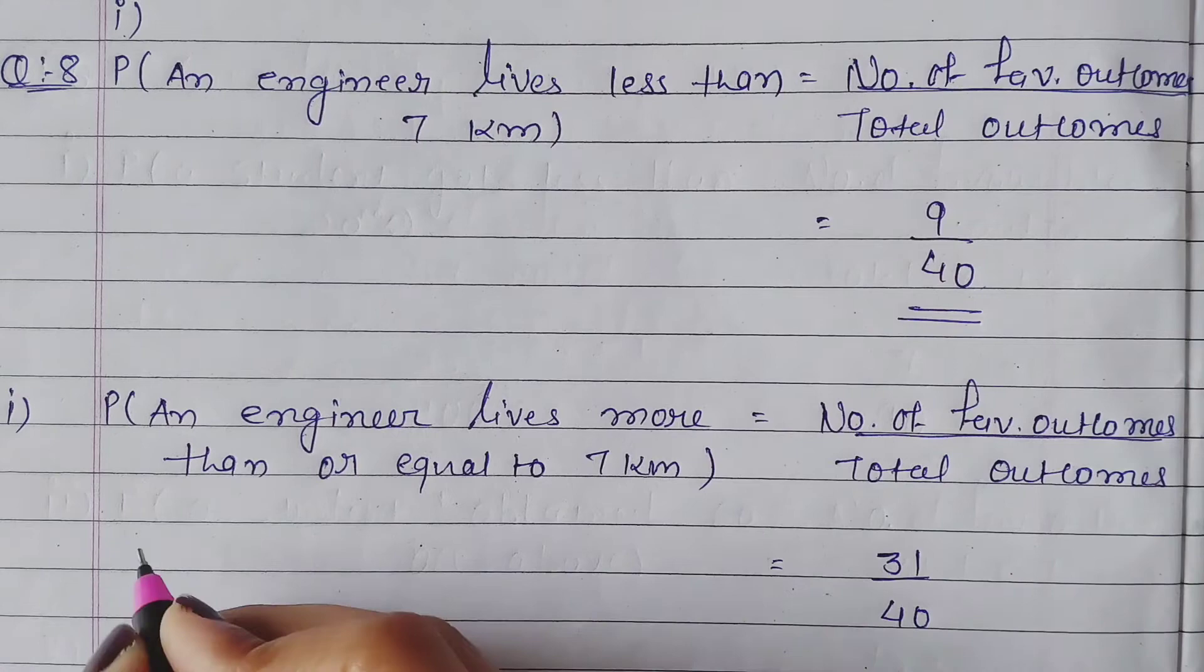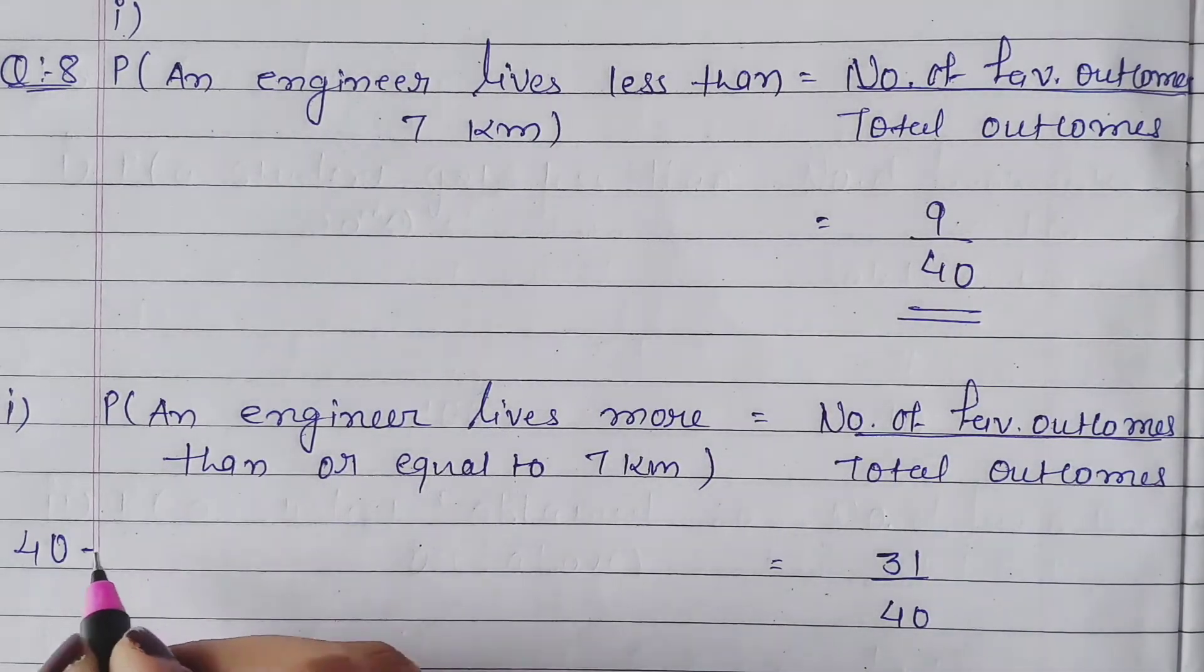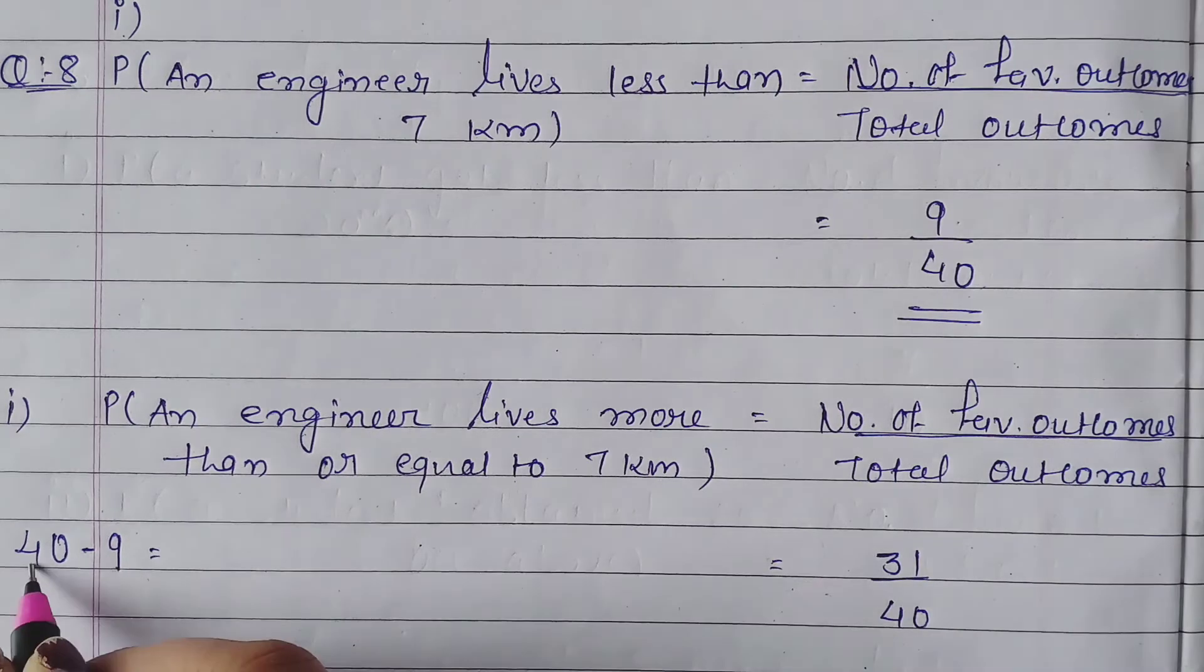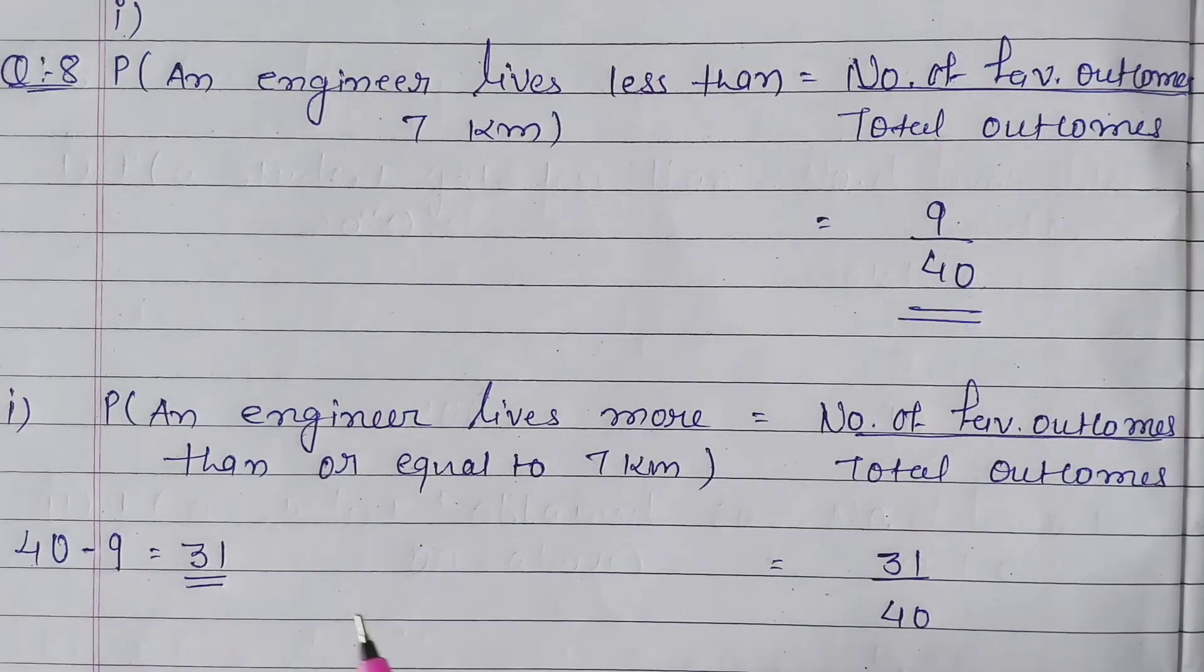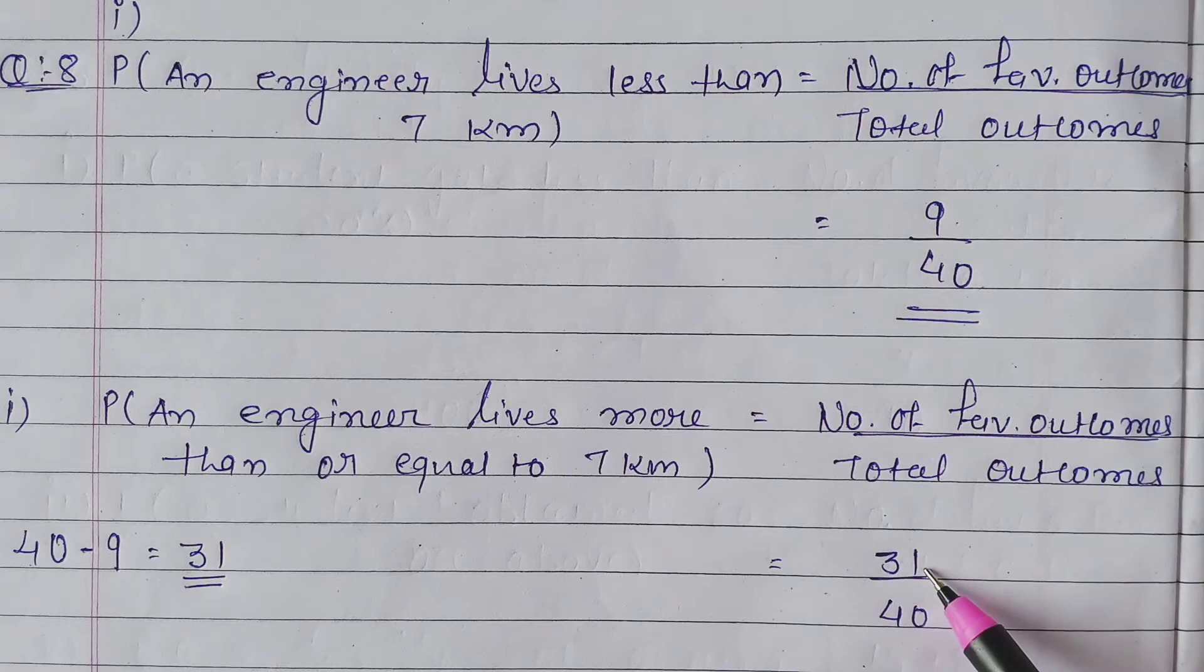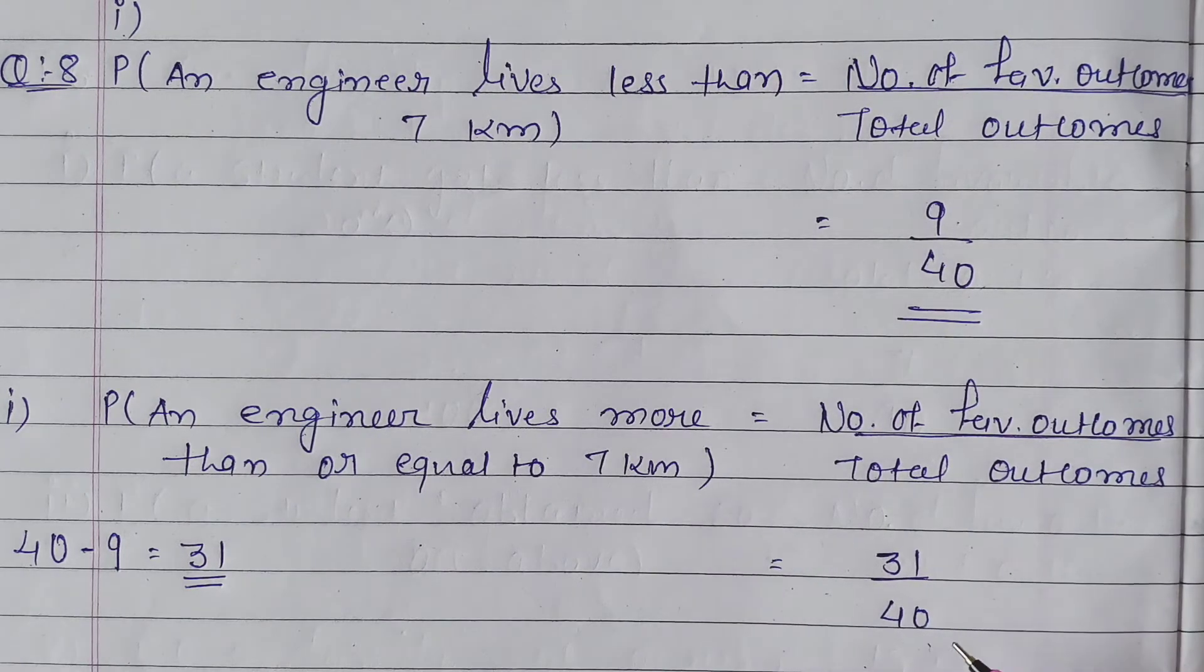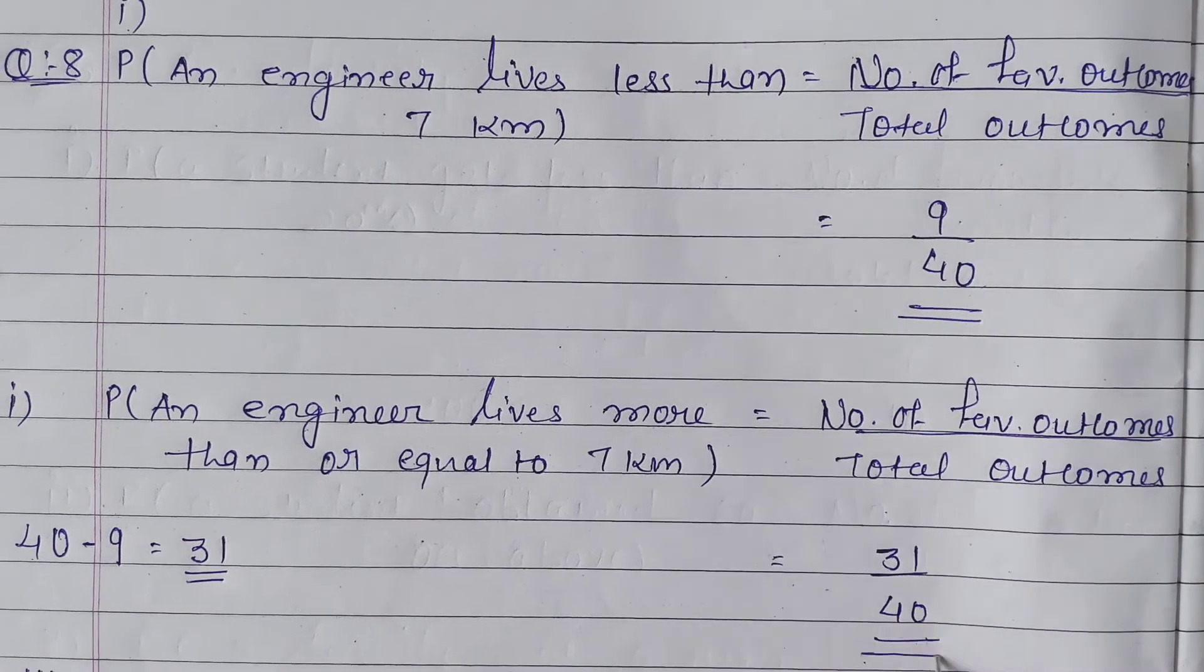Total engineers we have 40. Isme se less than 7 km wale kitnay hai? 9. So 40 minus 9 karenge toh kitnay bachenge? 31. So 31 engineers jo hai, woh 7 or 7 se zyada distance wale honge. Yahan pe favorable outcomes me kitnay put karenge? 31. And total jo engineers hai, woh hai 40. So 31 upon 40 is the answer.